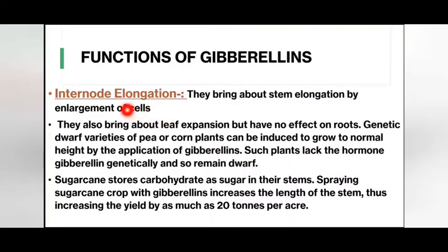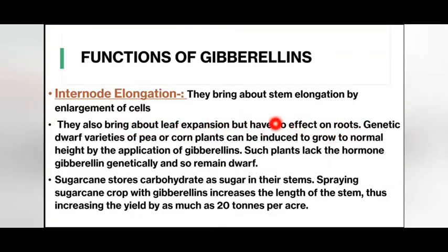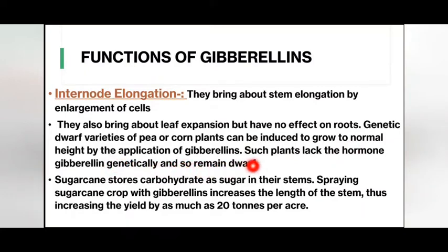Regarding the functions of gibberellins: first, internode elongation — they bring about stem elongation by enlargement of cells. They also bring about leaf expansion but have no effect on roots. Genetic dwarf varieties of pea or corn plants can be induced to grow to normal height by the application of gibberellins, as such plants lack the hormone gibberellin genetically and so remain dwarf.